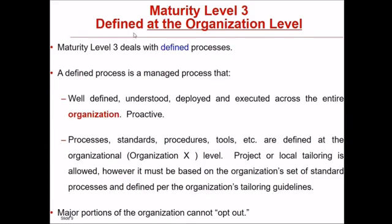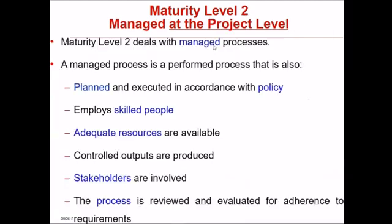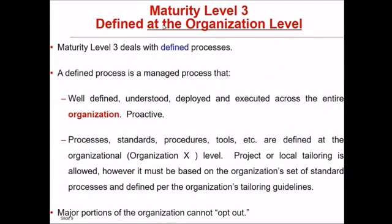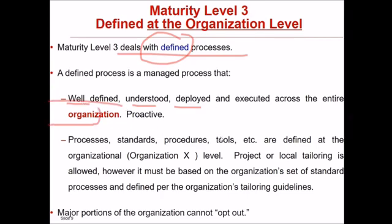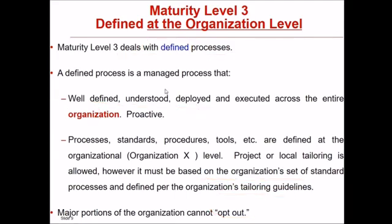Maturity level three is Defined, at the organizational level. While level two is managed at the project level, level three is at the organizational level. A defined process is a managed process that is well defined, understood, deployed, and executed across the entire organization — processes, standards, procedures, and tools are defined at the organizational level. Project or local tailoring is allowed, but it must be based on the organizational set of standard processes and tailoring guidelines. Major portions of the organization cannot opt out.